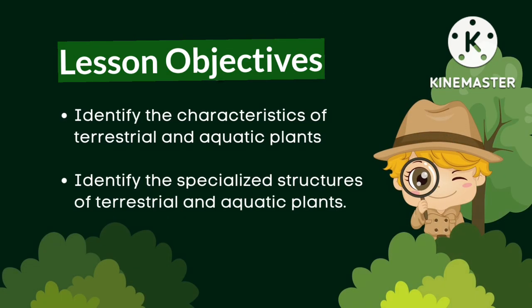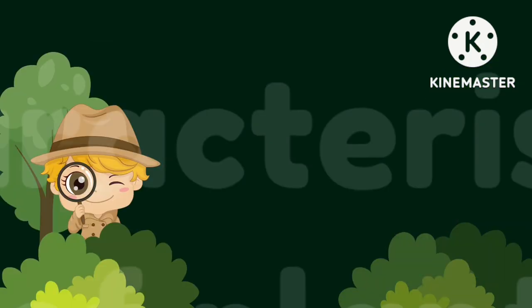For our lesson objectives: first, identify the characteristics of terrestrial and aquatic plants, and second, identify the specialized structures of terrestrial and aquatic plants.